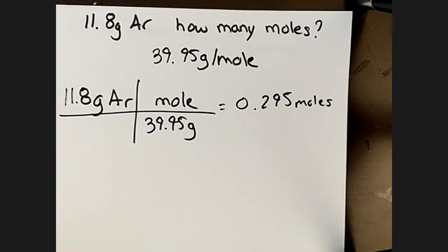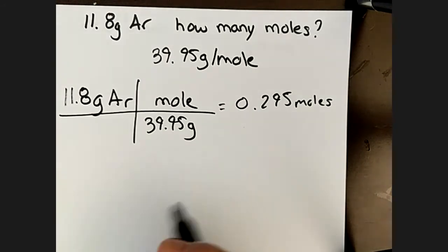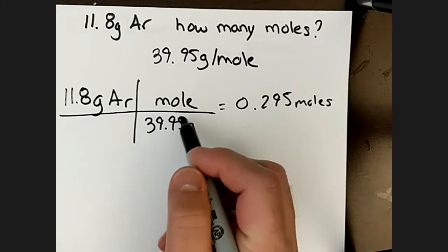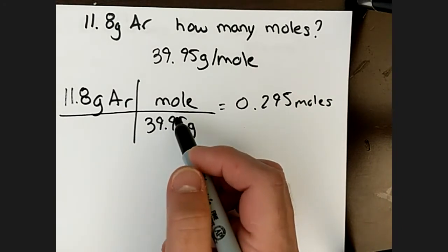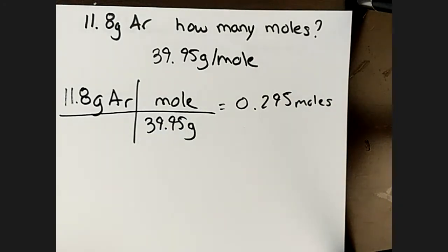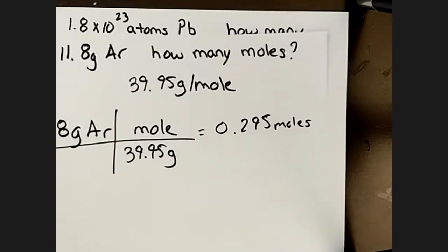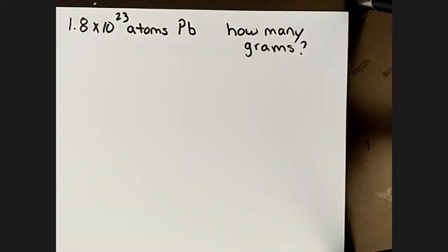The other way is to go backwards: if we're given moles and want to know the mass, we would multiply by the molecular weight. The process flowchart doesn't indicate that down is always divide and up is always multiply — it doesn't always work that way.